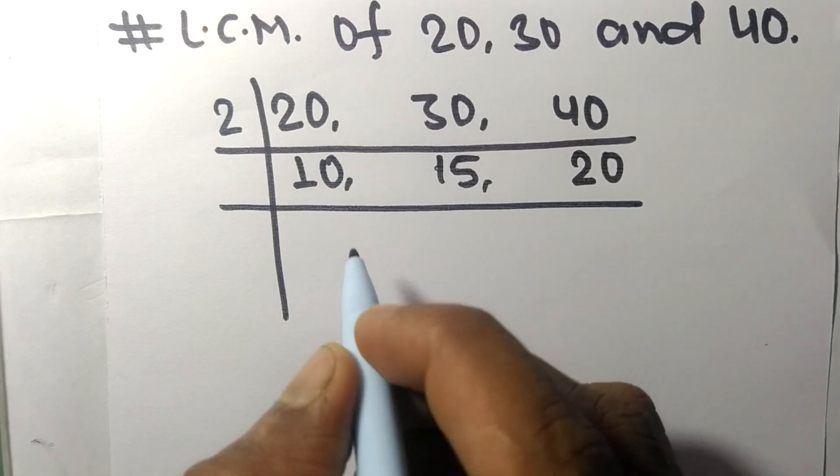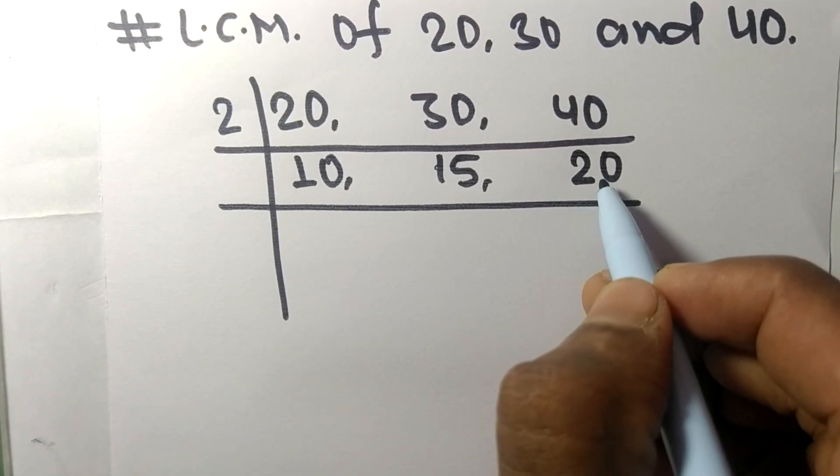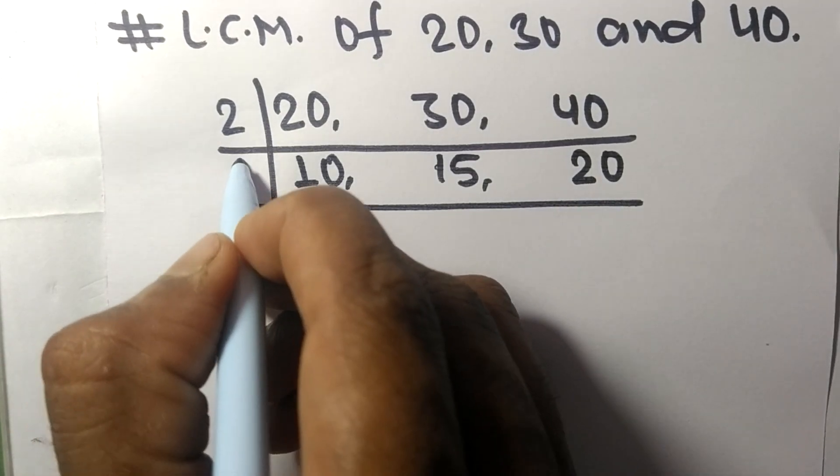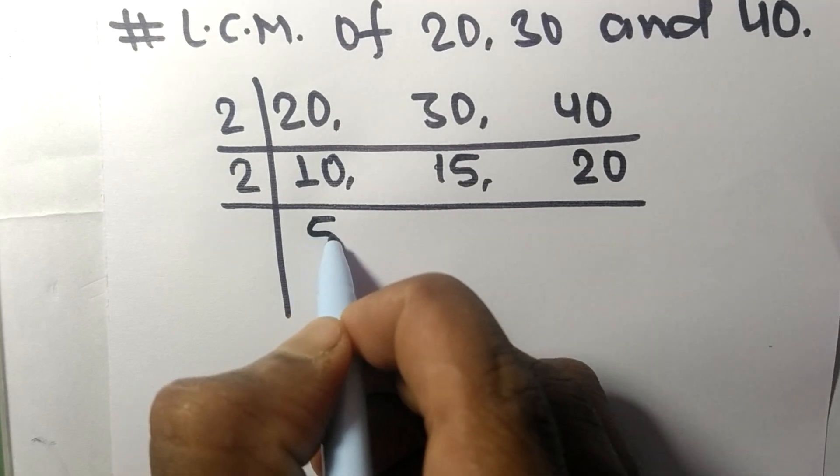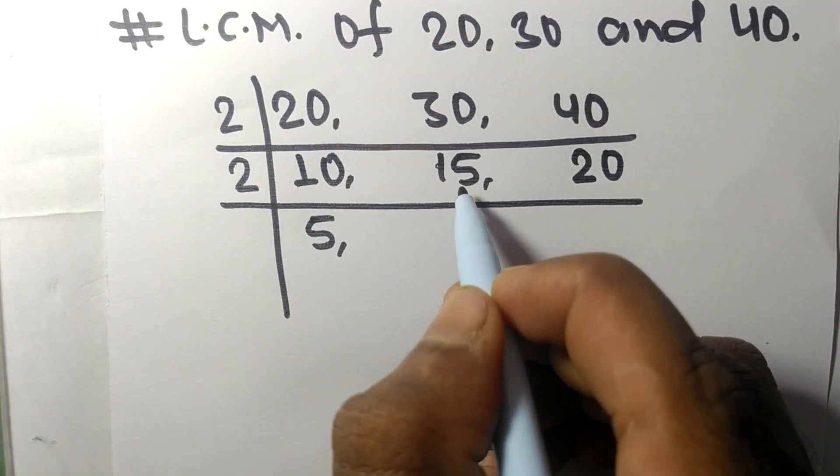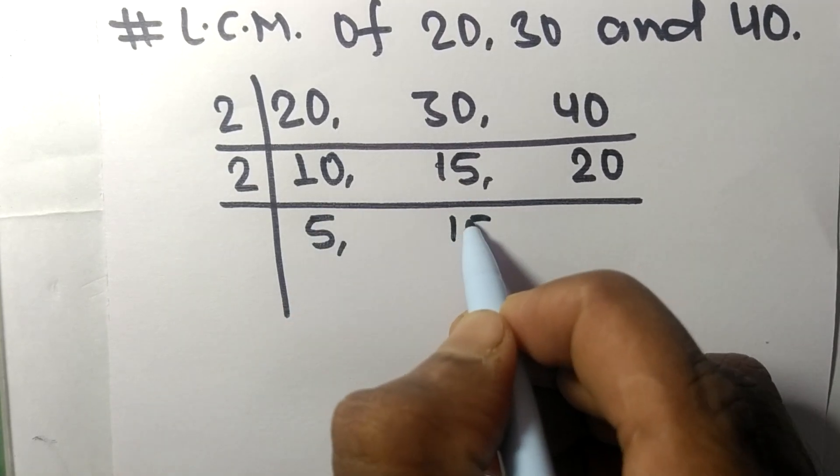Now the numbers 10 and 20 are divisible by 2. 2 times 5 means 10, 15 is not divisible so it stays the same, 2 times 10 means 20.